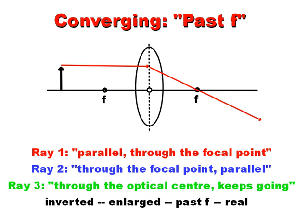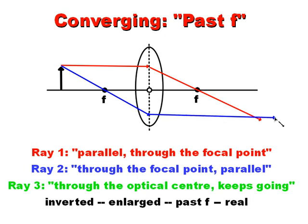The second ray is going to go through the focal point first and then go parallel — it's kind of the opposite of the first one. The third one, which is almost overkill here, but we'll put it in because it'll come in handy later: it goes right through the center of the lens, called the optical center, and it's not refracted at all — it just keeps moving.